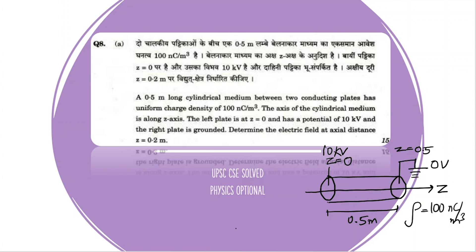In this question we have to find out the electric field at an axial distance of 0.2 meters, that is at Z equal to 0.2 meters. So let's start solving this question.